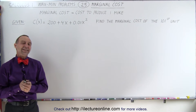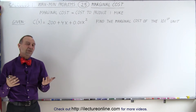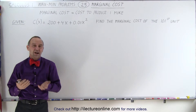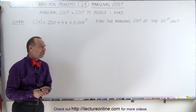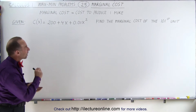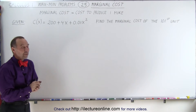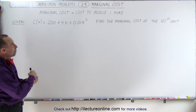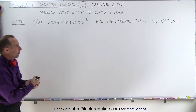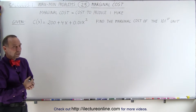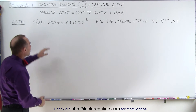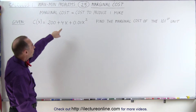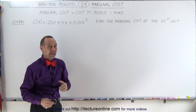Welcome to ElectronLine. Since we touched upon things such as profit, cost, and revenue, I wanted to touch upon one additional topic related to max-min problems, which is called the marginal cost. The definition of marginal cost is that it's the cost to produce one more unit.